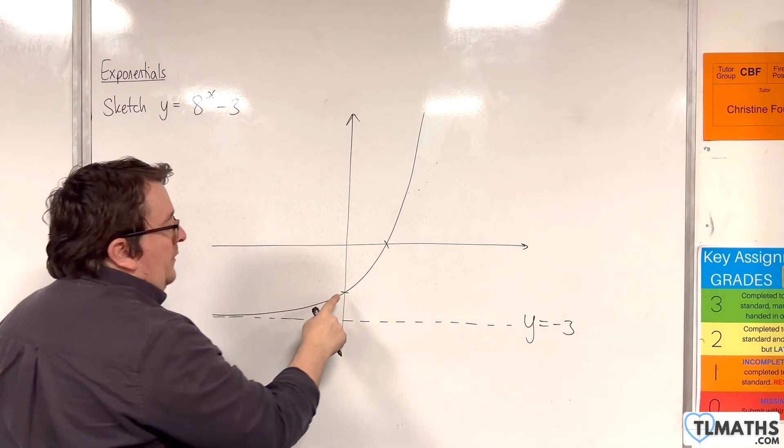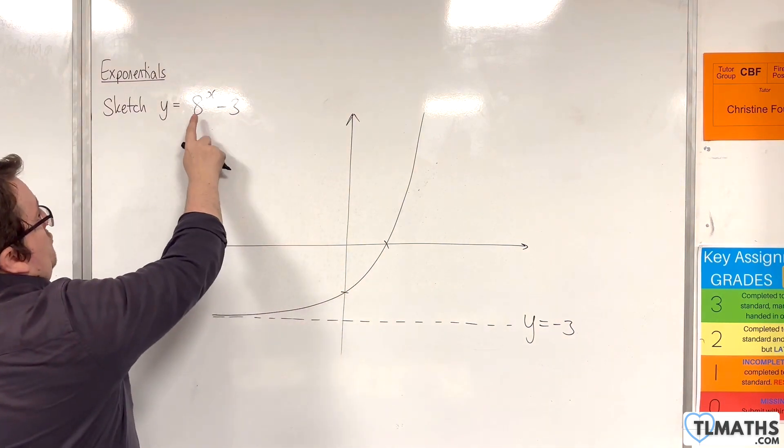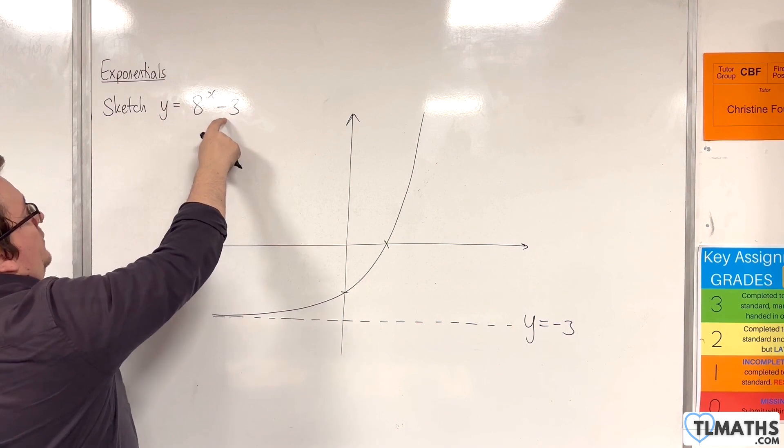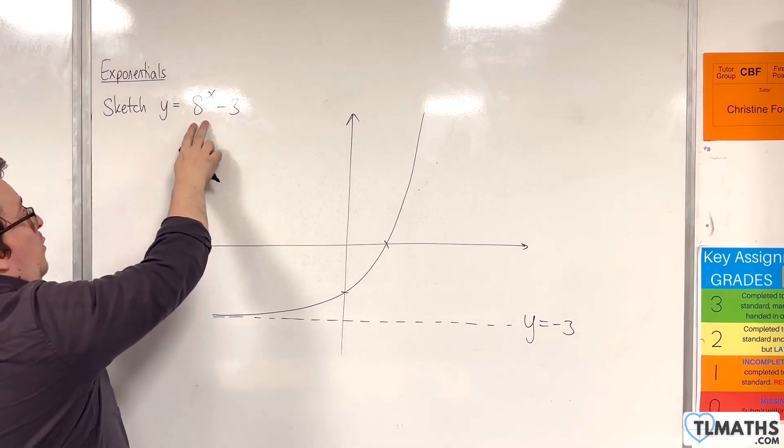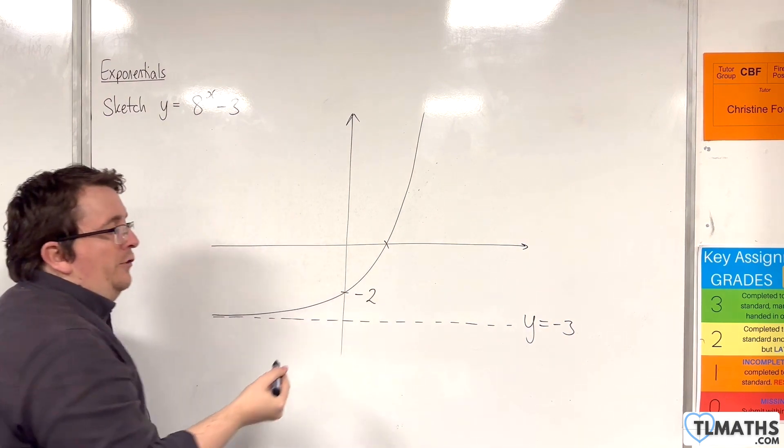Now, it's going to cross the y-axis when x is 0. So when x is 0, we'll have 8^0 - 3. 8^0 is 1, so 1 - 3 is -2. That is where it crosses the y-axis.